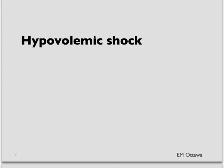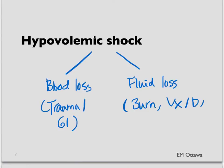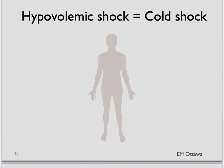Next, we will discuss hypovolemic shock. This is the most common type of shock. It either occurs because of volume loss of blood, as in trauma or GI bleed, or fluid loss, as in burn, vomiting, or diarrhea. Patients in hypovolemic shock will be peripherally shut down with poor perfusion, also known as cold shock. They're usually tachycardic and their pulse pressure will be narrow.